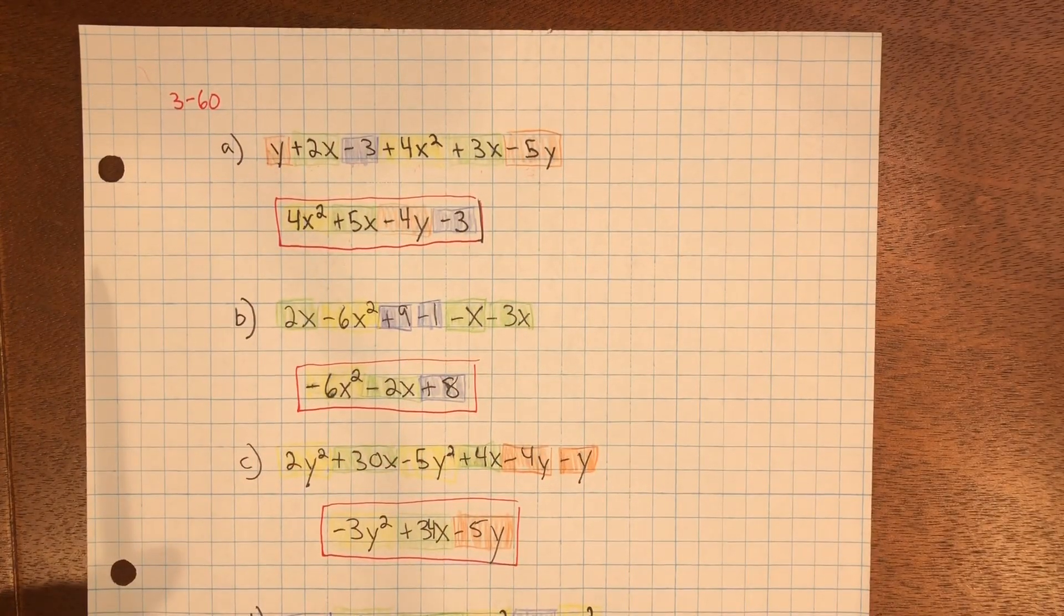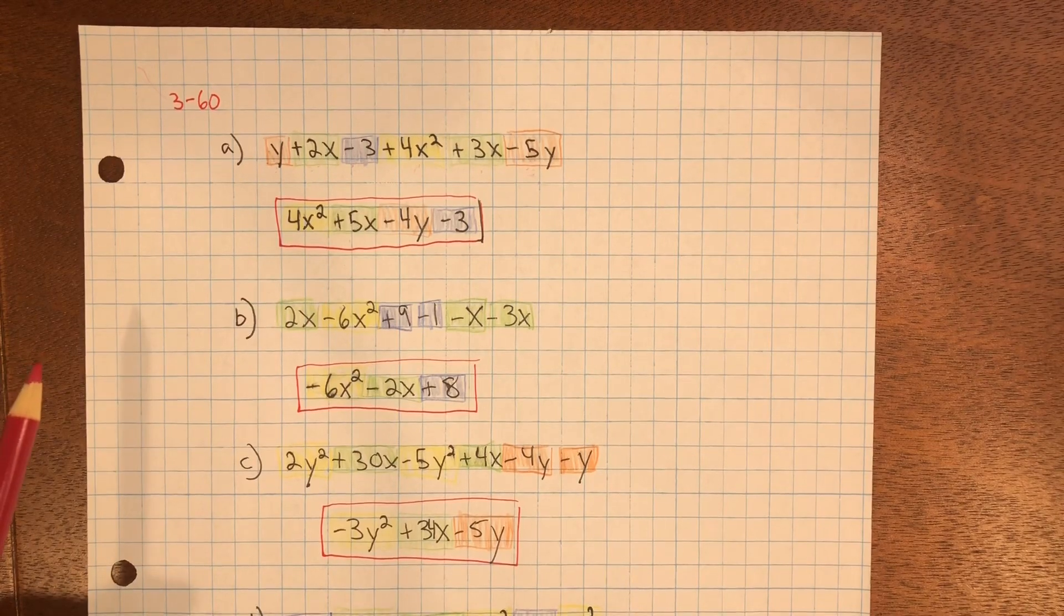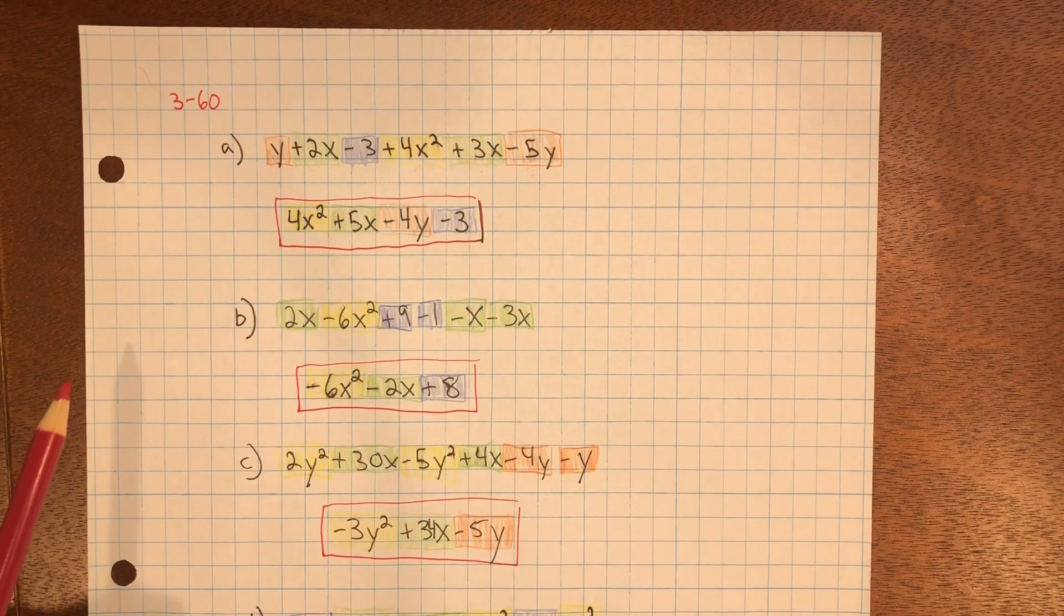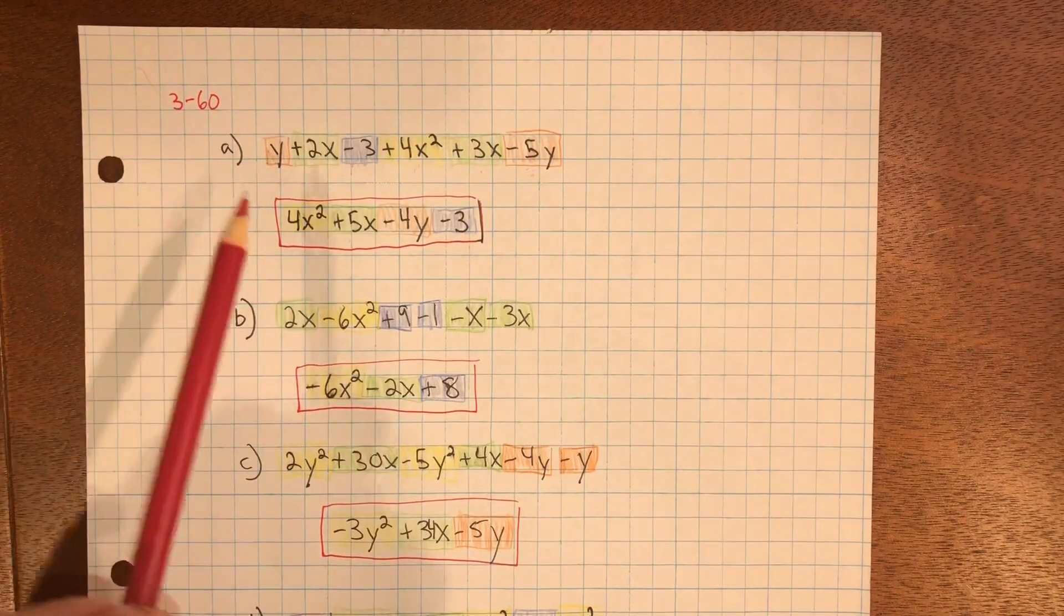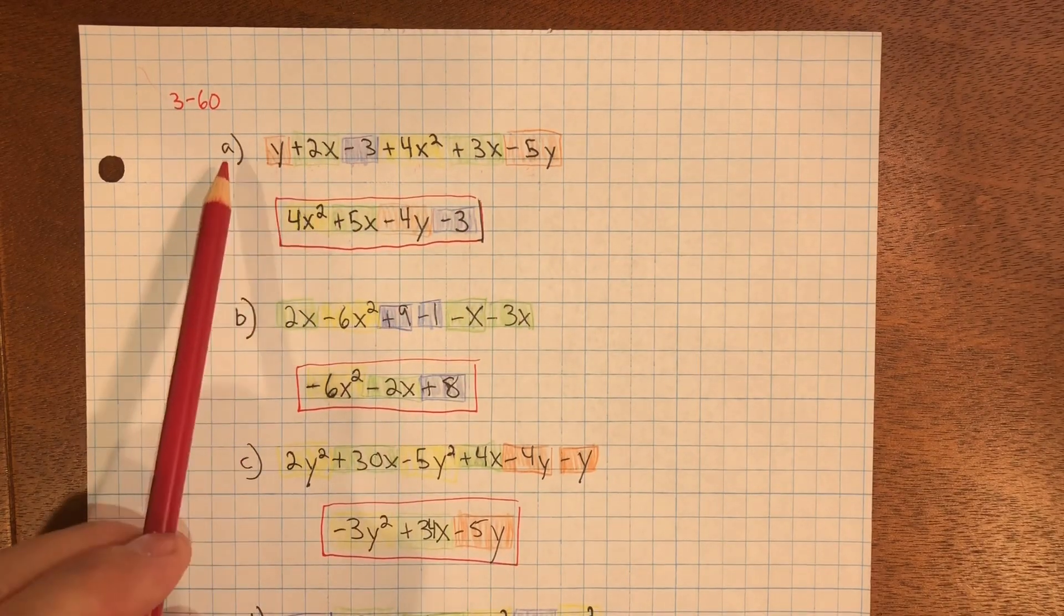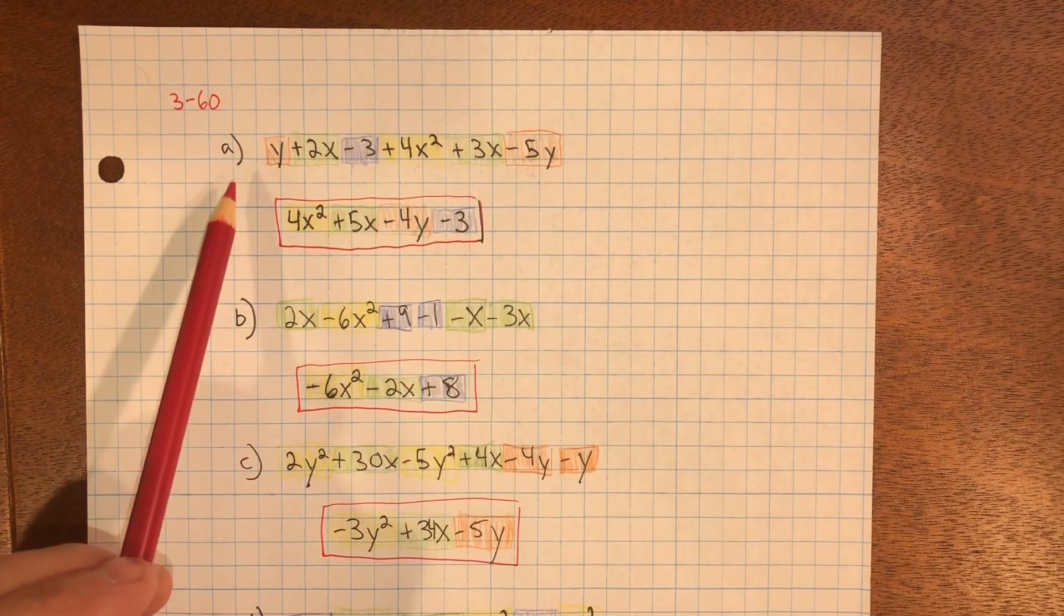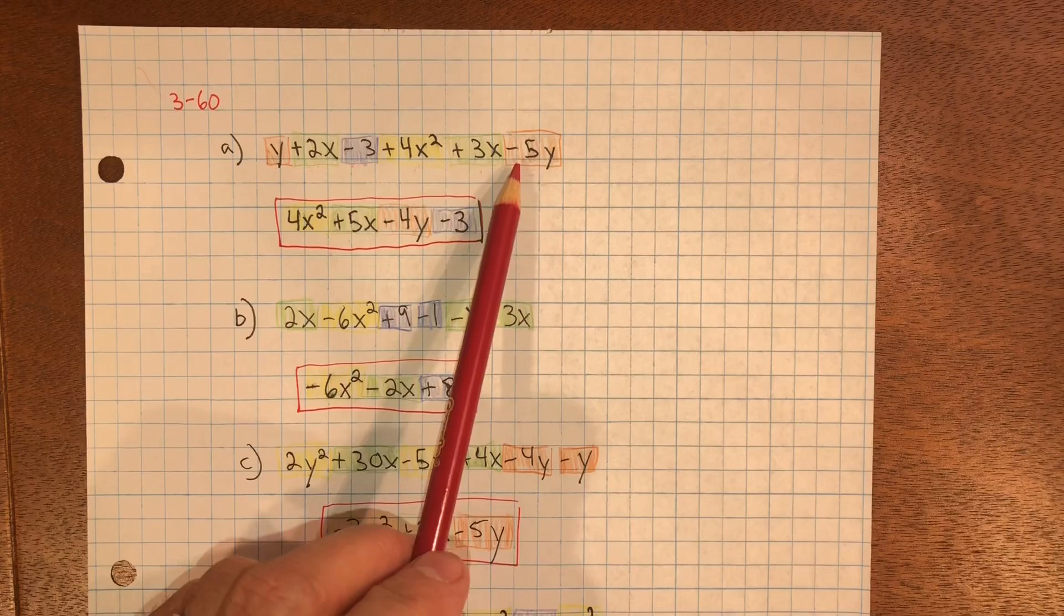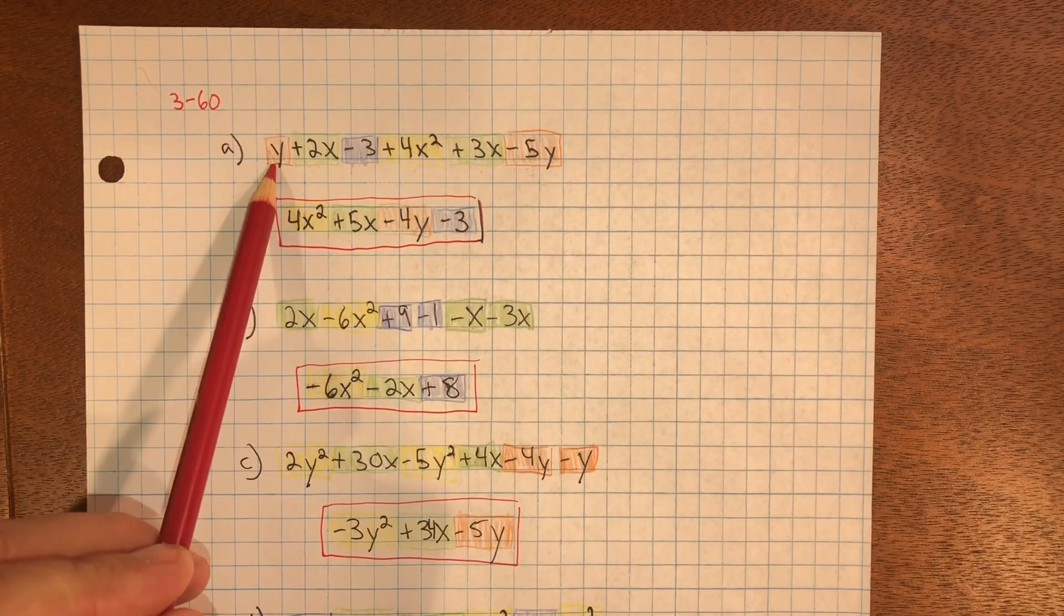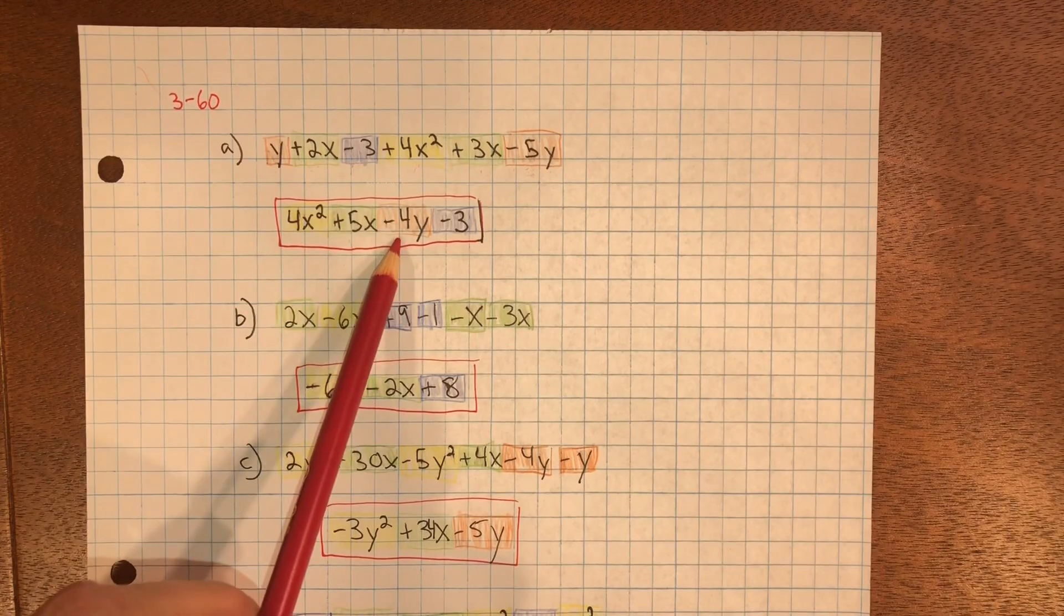For problem 360, you need to copy and simplify the following expressions by combining like terms. When I'm combining like terms, I like to have them the same color. That way I can clearly see which terms I can combine.